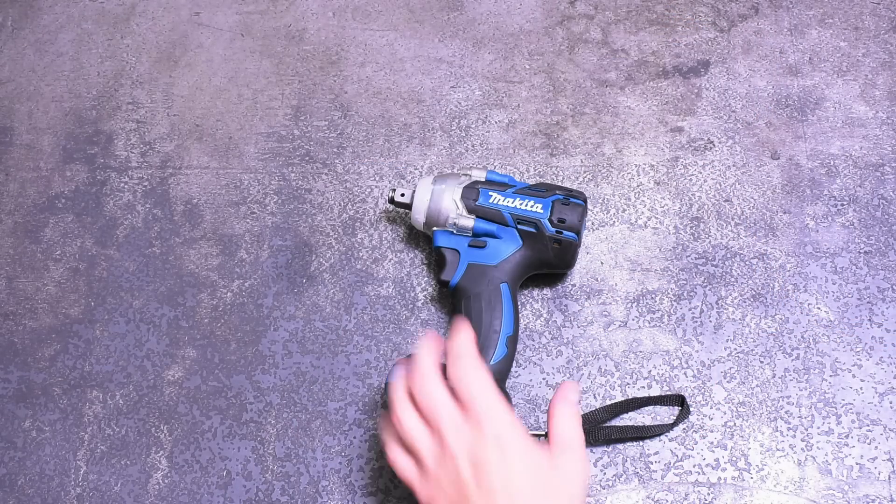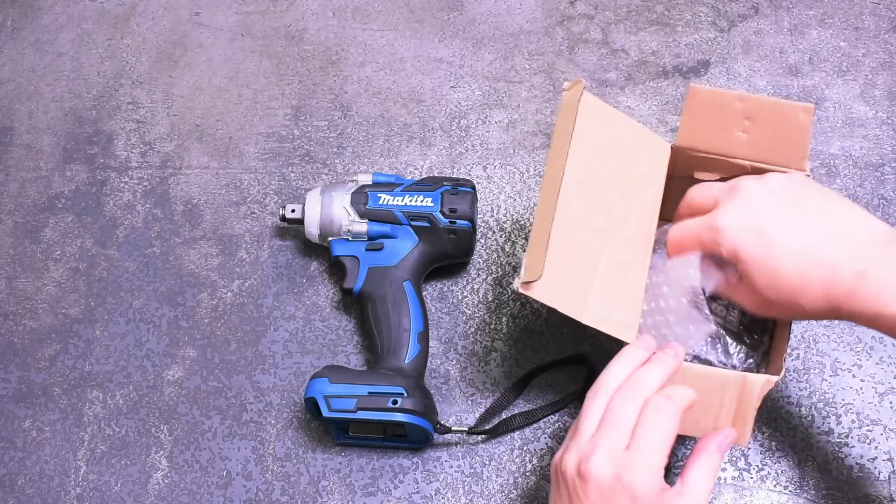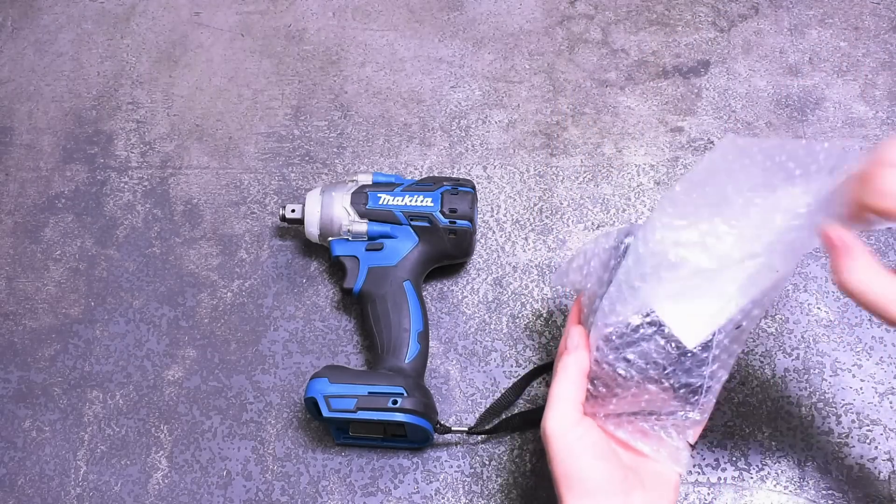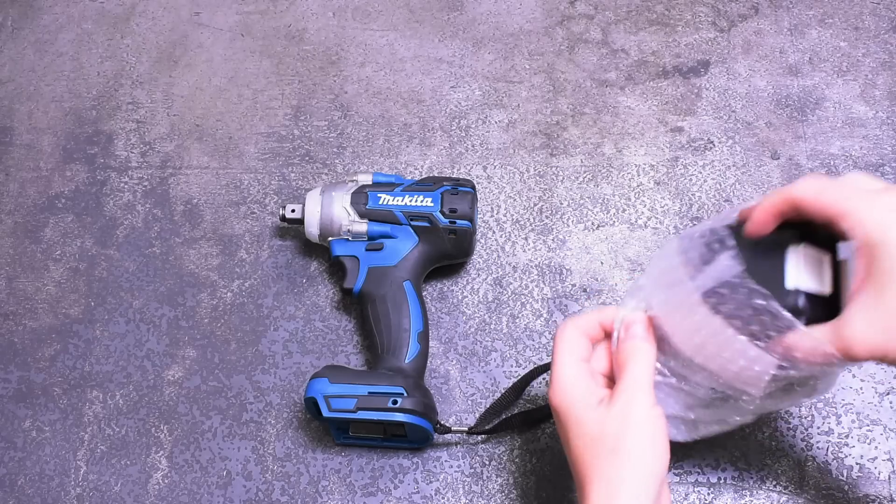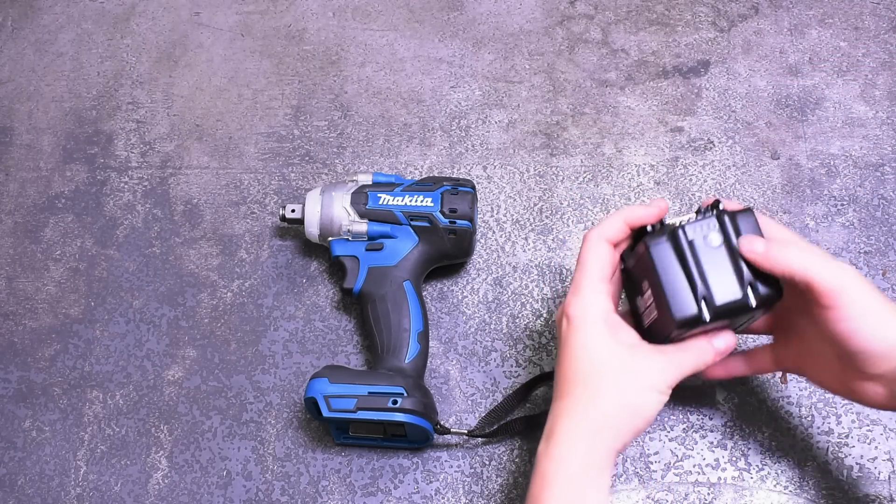You get what you pay for, I guess. But this huge 9 amp hour pack should do the trick. It's 50% larger than the biggest Makita that they sell in 18 volt. We'll be strapping this onto both the real and knockoff Makitas at the end of our testing to see how it improves things if it does.